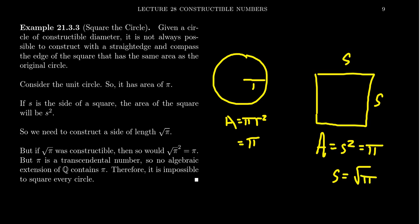I then claim that √π, which is the necessary side length for this square, is not a constructible number. Because if it were, if √π was a constructible number, then if you square the square root of π, you get π.